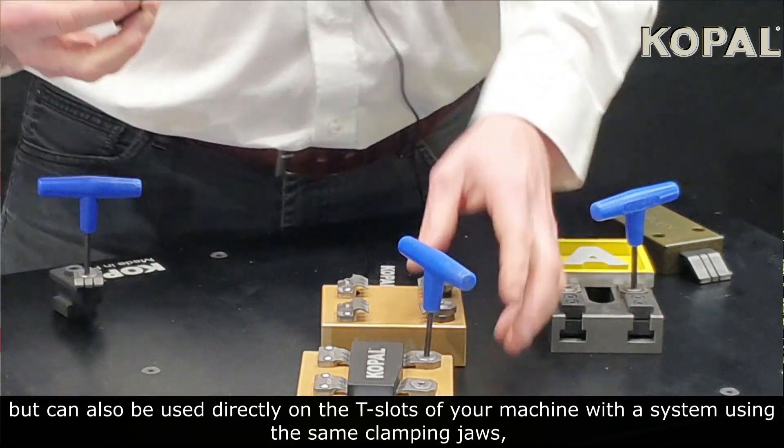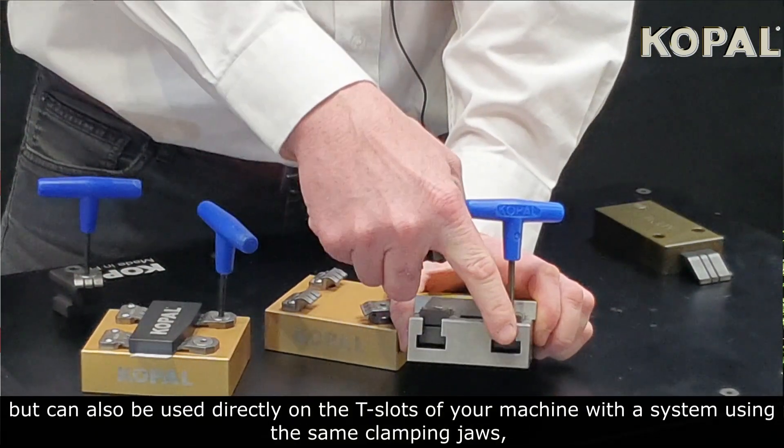But it can also be used directly on the T-slots of the machine with the system using the same clamping jaws.